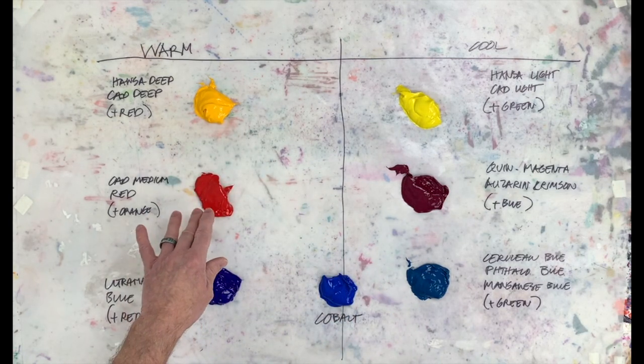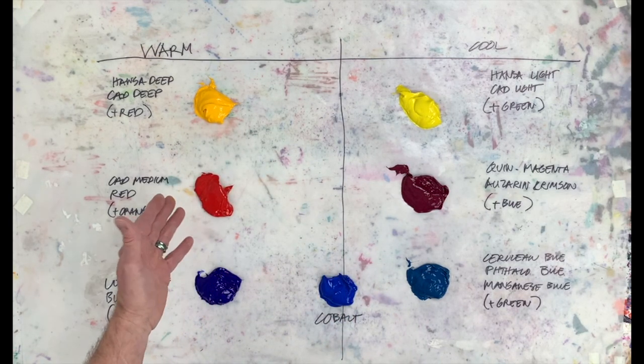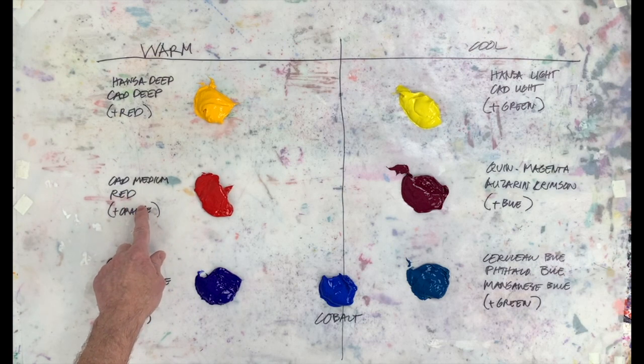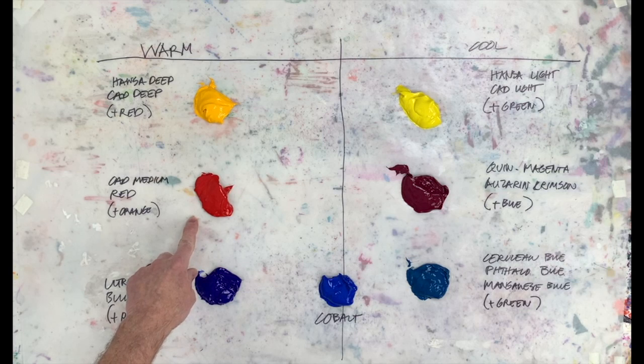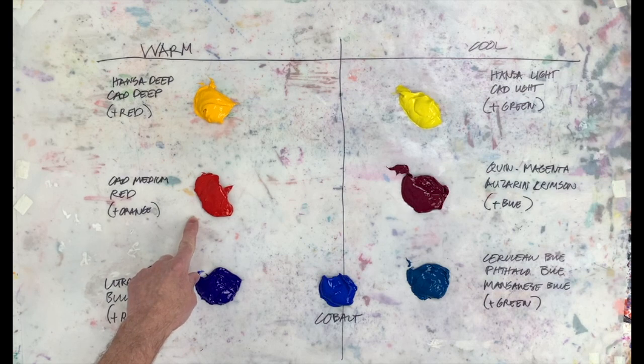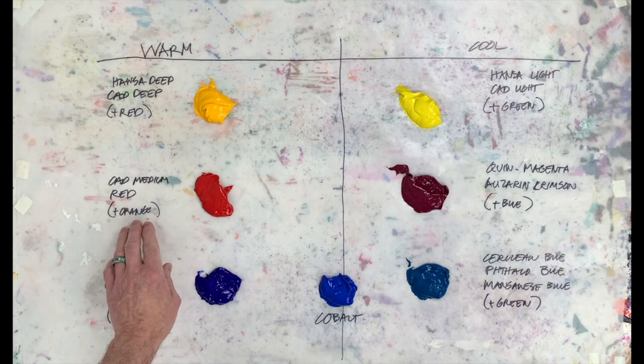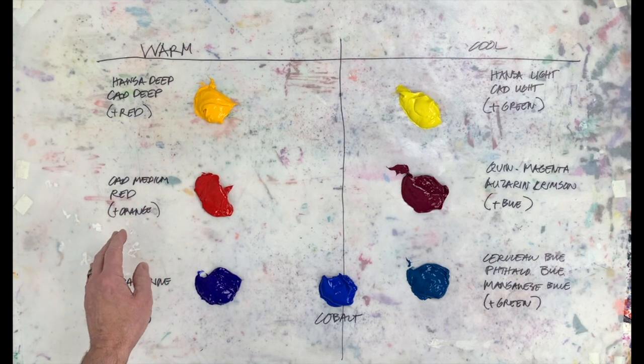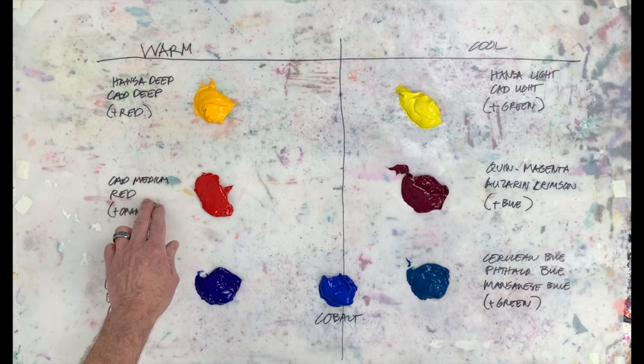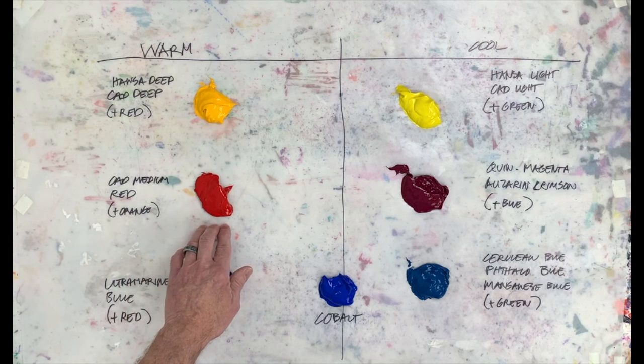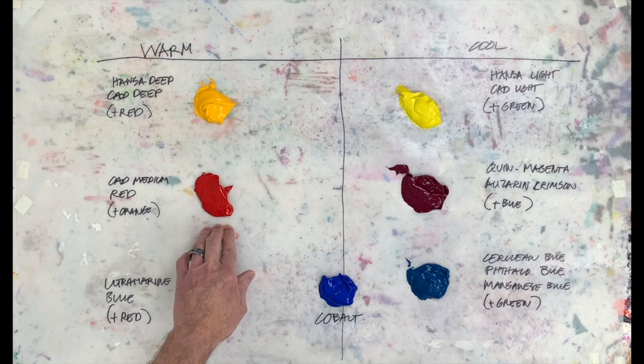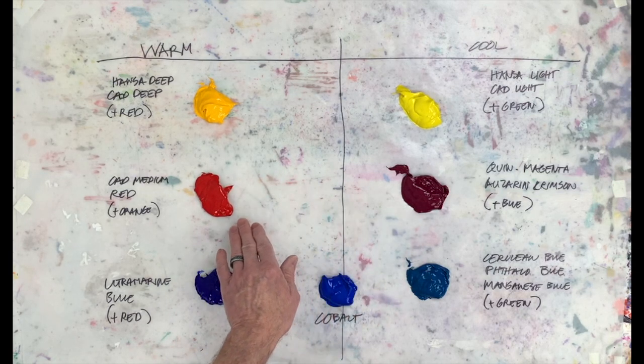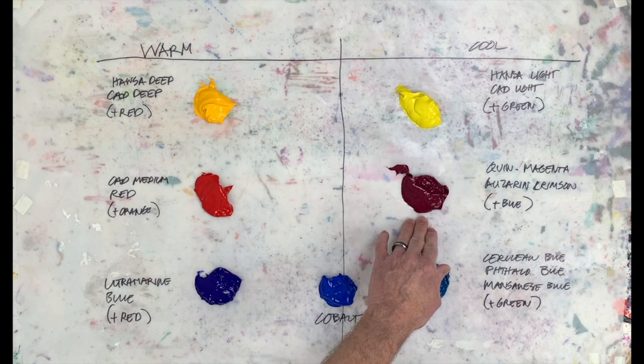Now let's move to the reds. Typically for a warm red, most people are going to use cadmium red medium, and that's what this is. There are other things like pyrrole red and several different pyrrole reds. This is the most common one, and it's a warmer red because it has orange mixed into the red to warm it up.